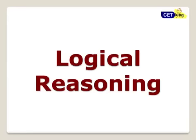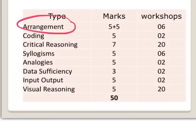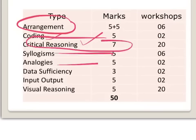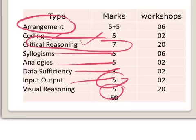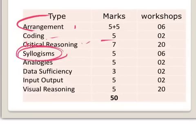Let's have the first part — logical reasoning, all the important areas and what to prepare. Important topic wise: puzzles — there are always two logical puzzles; coding-decoding; critical reasoning — seven questions; syllogism — five questions; analogies — five questions; data sufficiency — three; input output and visual reasoning. The few areas which are more deciding factors are syllogism — ninety percent of people do this question wrong. If you are doing five questions you will get three out of five. People don't score five out of five. That's why we are keeping six workshops for this area.